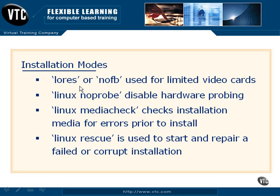Some of the other less frequently used installation modes include LORES, NOFB, and Linux NOPROBE. These are basically options that allow you to install if your existing hardware is not optimal for the distribution you're installing. For example, NOFB will disable frame buffers when the video card is very old and might not support that feature. Linux NOPROBE will allow you the functionality of not even looking for hardware — useful if you're using non-standard hardware such as very old SCSI controllers or extremely old graphical adapters, allowing you to install those hardware components manually using alternate drivers.